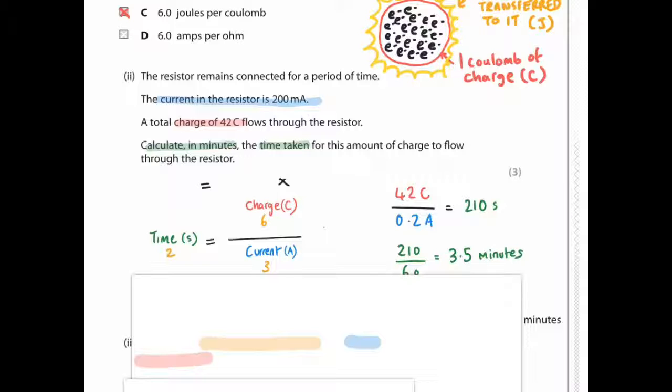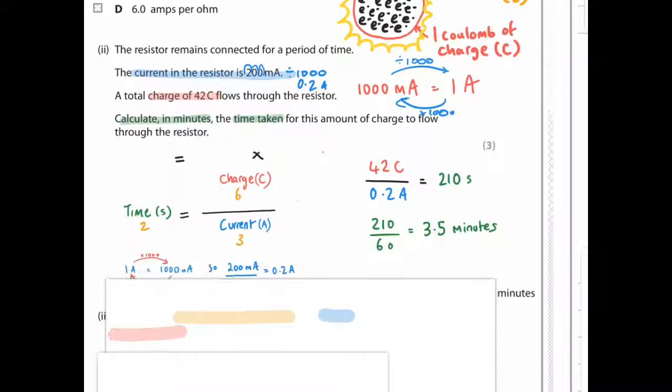The second point is we have a unit conversion here. If you remember that 1,000 milliamps equals 1 amp, to convert amps to milliamps, you divide by 1,000. So we've got 200 milliamps, we want to convert it to amps, so we divide by 1,000 to get 0.2 amps. Now we have charge, 42 coulombs divided by 0.2 amps, will give you 210 seconds, but it did say minutes. So 60 seconds to a minute, 210 divided by 60 will give you 3.5 minutes.